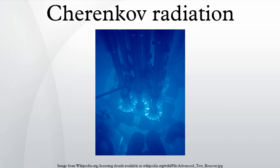Nuclear reactors: Cherenkov radiation is used to detect high-energy charged particles. In pool-type nuclear reactors, beta particles are released as the fission products decay. The glow continues after the chain reaction stops, dimming as the shorter-lived products decay. Similarly, Cherenkov radiation can characterize the remaining radioactivity of spent fuel rods.